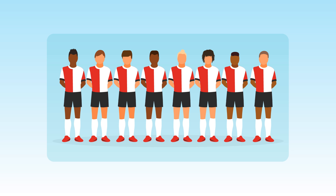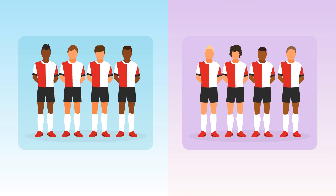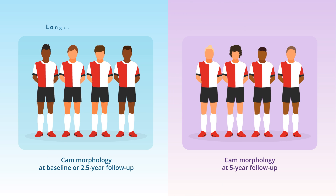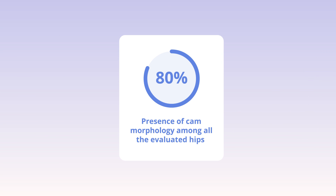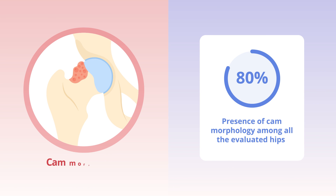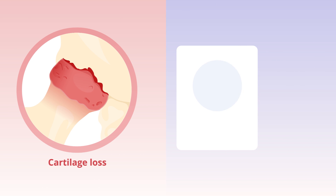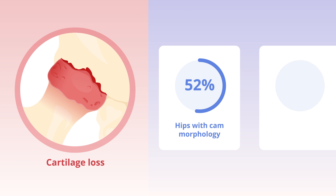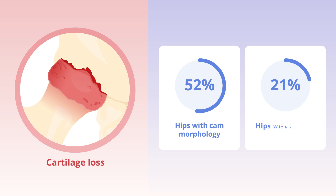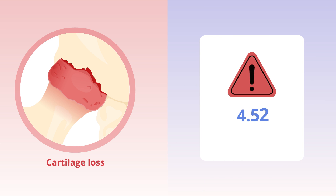The researchers further compared the study participants based on the duration of cam morphology as longer duration and shorter duration groups. The findings showed that 80% of the hips examined exhibited cam morphology. Cartilage loss was observed in 52% of these hips compared with 21% in those without cam morphology, indicating a 4.52 times higher risk of cartilage loss for hips with cam morphology.